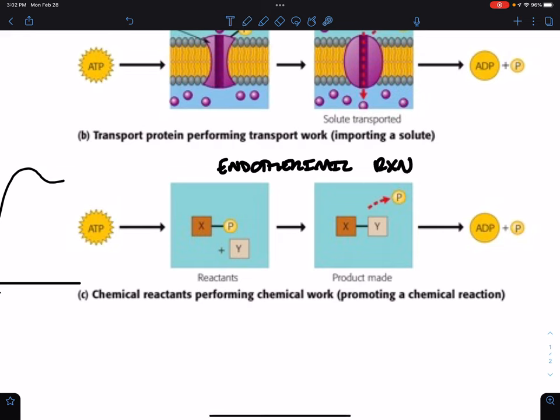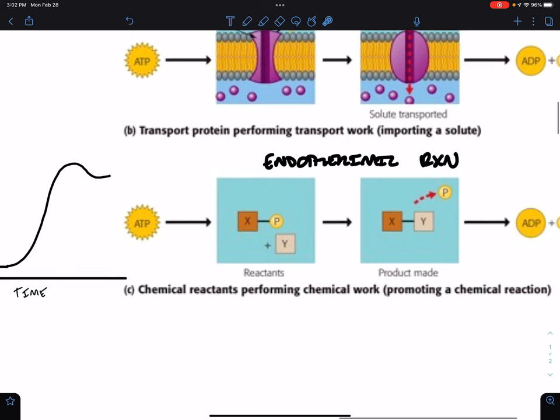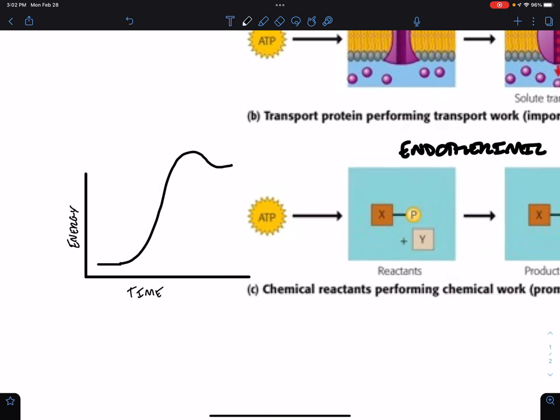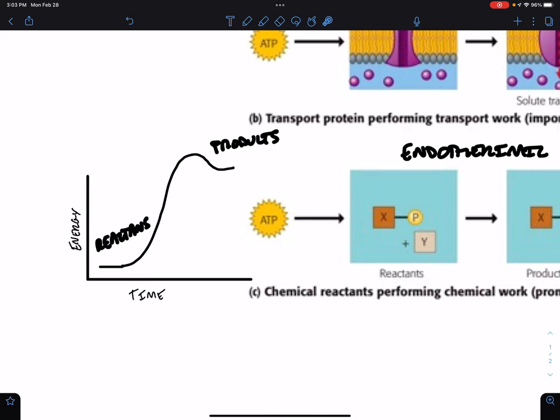We can couple this endothermic reaction with the splitting of ATP into ADP and free phosphate in order to power that reaction. So imagine we have a situation where our reactants have less energy than the final products. Well, we need to put energy into this reaction in order to get it to take place. It's not going to happen spontaneously like it could if the products had more energy than the reactants, if energy was released in the process.